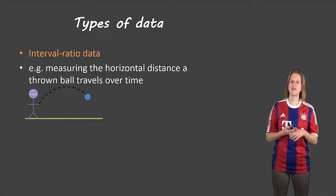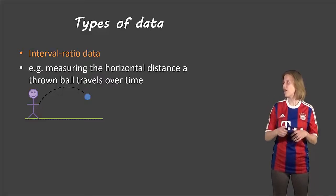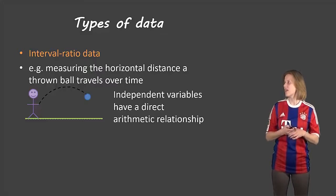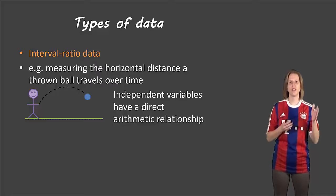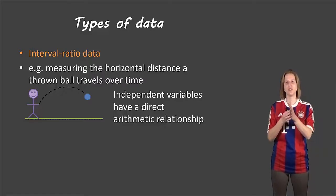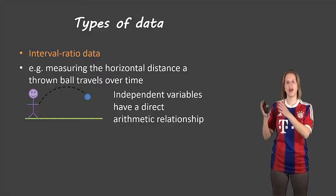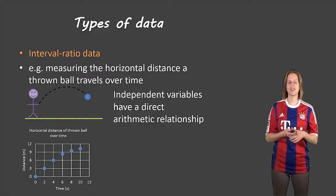And the last type is the interval-ratio data. In this example you're measuring the horizontal distance of a thrown ball and how far it travels over time. In this case, independent variables have a direct arithmetic relationship. So the difference between, let's say we're measuring in meters, the difference between one meter and two meters is the same distance as between two meters and three meters, between three meters and four meters, and so on. It's always different by one meter.